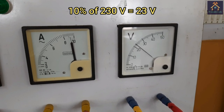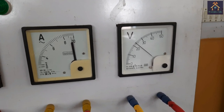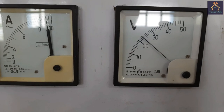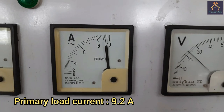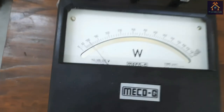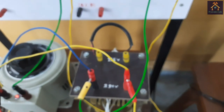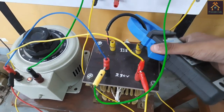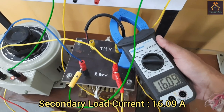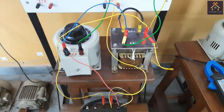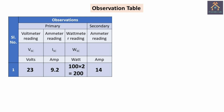The transformer is carrying a huge amount of primary current, about 10 ampere. You can see the primary voltage is 23 volt only, and the primary load current is about 9.2 ampere. The wattmeter reading is 100 watt multiplied by 2, that means 200 watt. This wattage is only for the copper loss of the transformer. Now let's measure the secondary load current — you can see the load current is about 16.09 ampere. Our experiment is done, and we have to collect these readings and fill up the observation table. The voltage reading of the high voltage primary side is 23 volt, the ammeter reading is 9.2 ampere, the wattmeter reading is 200 watt, and the secondary ammeter reading is 14 ampere.